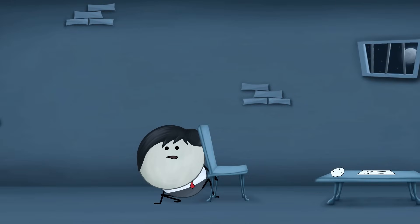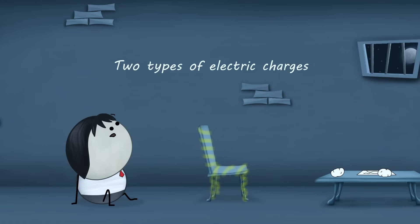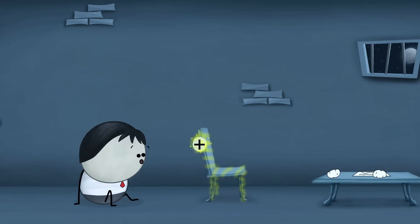Electric Charge is the quantity of electricity held in an object. There are two types of electric charges, positive and negative.